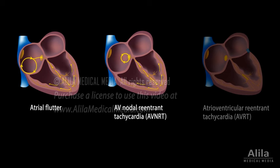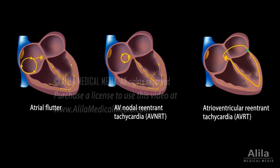Electrical cardioversion is most effective in treating arrhythmias that arise from a single re-entrant circuit, such as atrial flutter, AV nodal re-entrant tachycardia (AVNRT), or atrioventricular re-entrant tachycardia (AVRT). Arrhythmias that result from multiple circuits typically require higher energy shocks to be treated successfully.